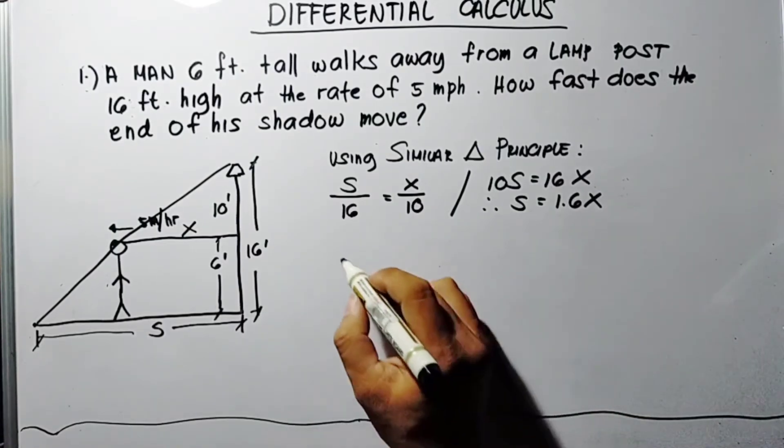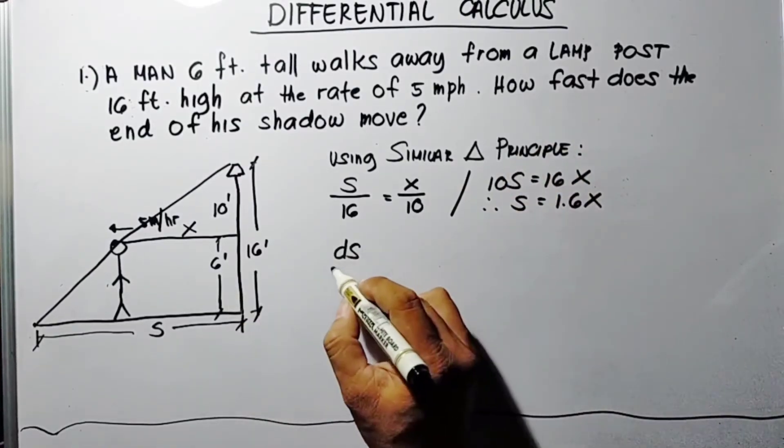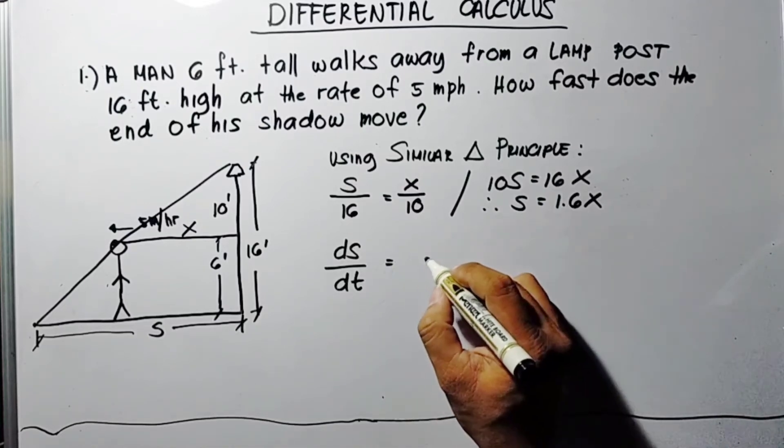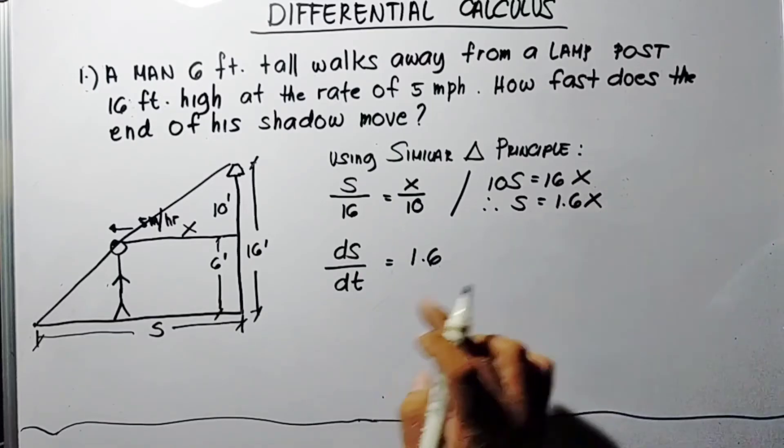Now ds/dt, we're looking for how fast, so ds/dt equals 1.6 times the derivative of x, which is 1.6 dx/dt.